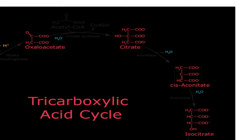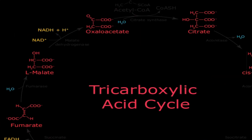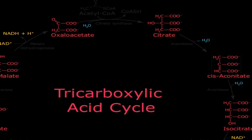Pyruvate, which is derived from glycolysis, is converted to acetyl-CoA — which we have already discussed when the metabolism of fructose occurs, it undergoes from pyruvate to acetyl-CoA. This acetyl-CoA, when it enters into the TCA cycle, reacts with oxaloacetate.